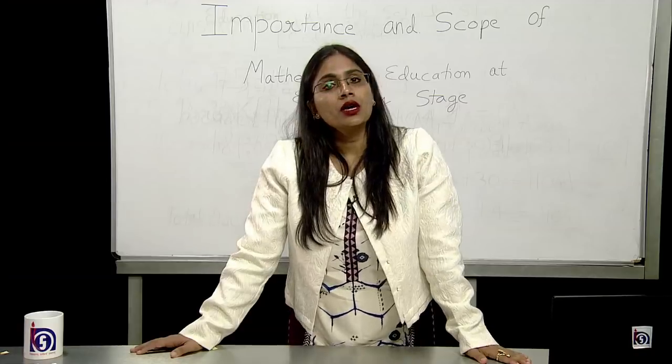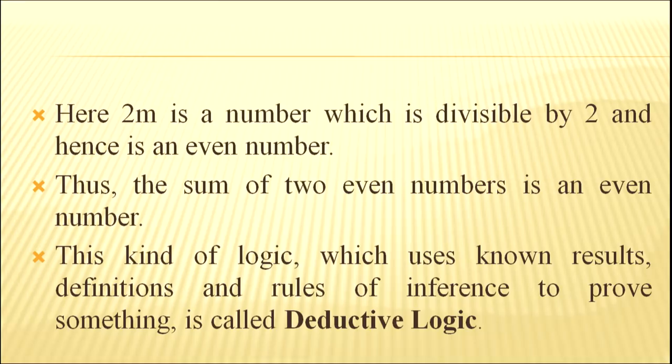Here 2m is a number which is divisible by 2 and hence is an even number. Thus, the sum of two numbers is an even number. This kind of logic which uses known results, definitions and rules of inference to prove something is called deductive logic.